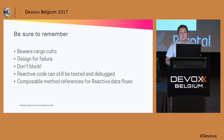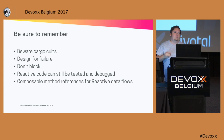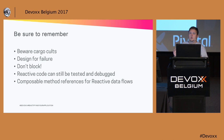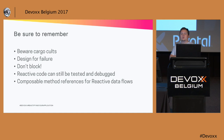Be sure to remember the following things: Beware cargo cults — really try to decide whether a technology is suitable for your organization and the issues you're trying to solve. Be sure to design for failure. Don't block when you use reactive programming. Your reactive code can still be tested and debugged — it's done in a different way than you're used to, but it can still be done. And when you use reactive data flows, be sure to use composable method references. Thank you for your time.